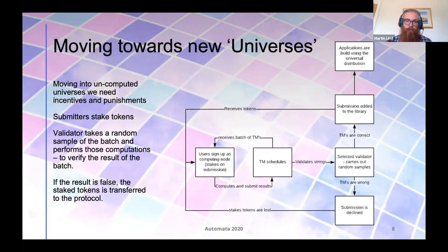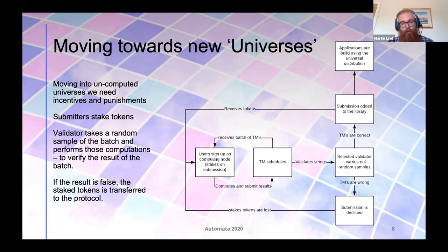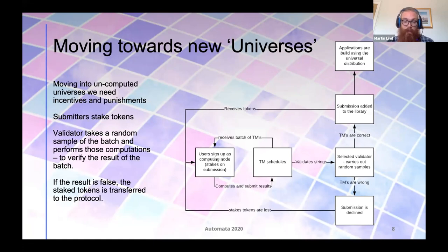As we move towards new Turing spaces — or informally, universes — we need to introduce mechanisms that award good behavior and punish bad behavior. For each submission that is made, the agent submitting it needs to also stake some tokens. Then the validator will carry out a random sample test, testing perhaps two or five percent of the submitted Turing machines and computing them. If they have the same value as the submission, the submitter gets awarded in a native token. If they don't, the staked tokens are taken by the protocol. In this way, you incentivize good behavior.